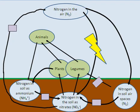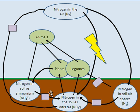Here is a diagram of a nitrogen cycle — can you fill in the gaps? Let's check what we've got. We've got plants and animals, nitrogen in the air, nitrogen in the airspaces in the soil, nitrogen as nitrates in the soil, and as ammonium ions. These four boxes are where our bacteria go.